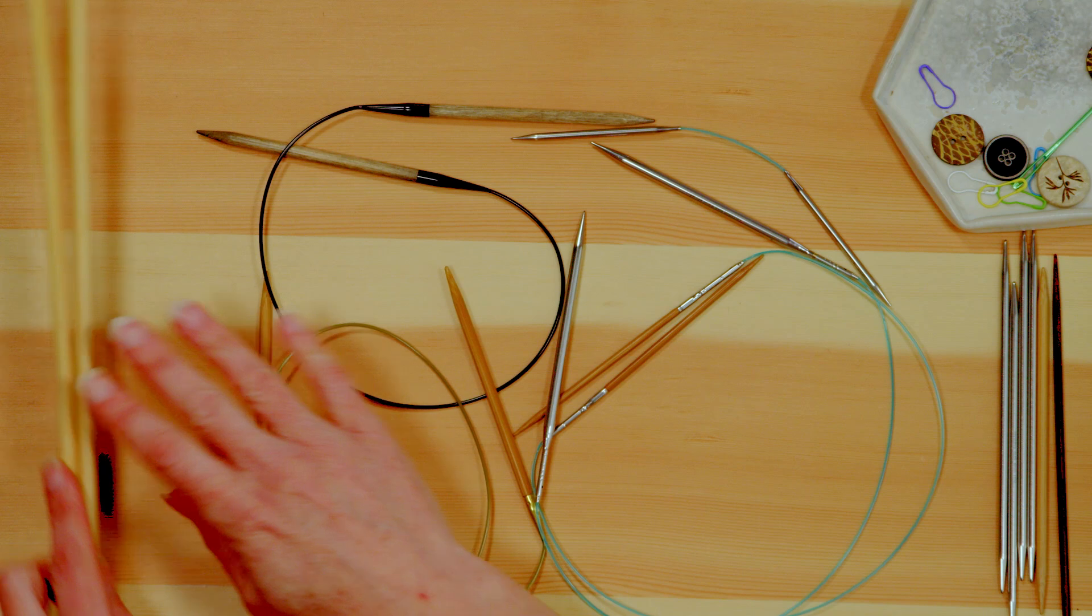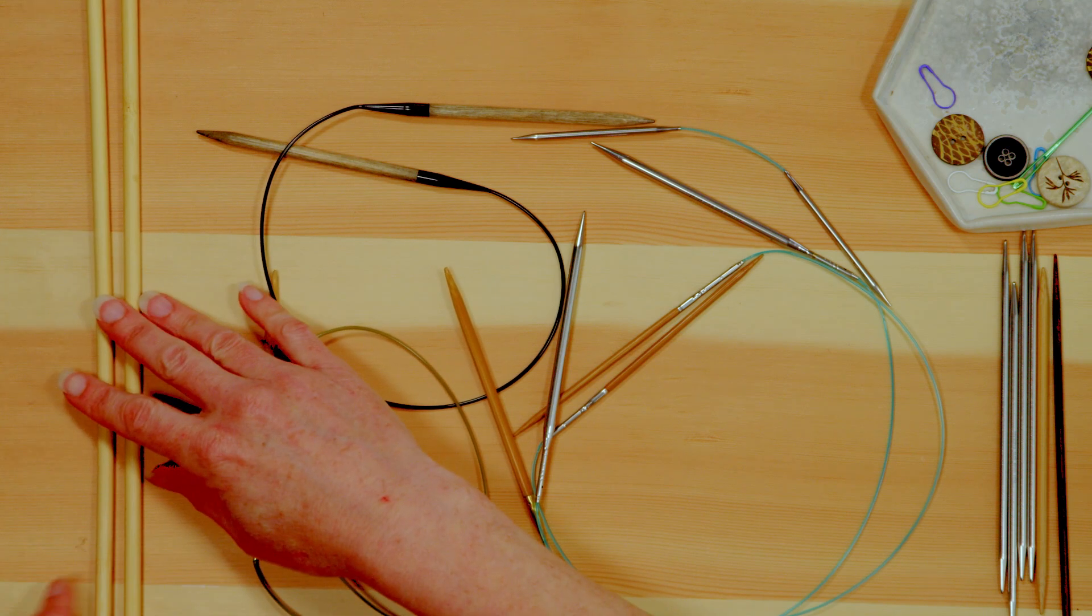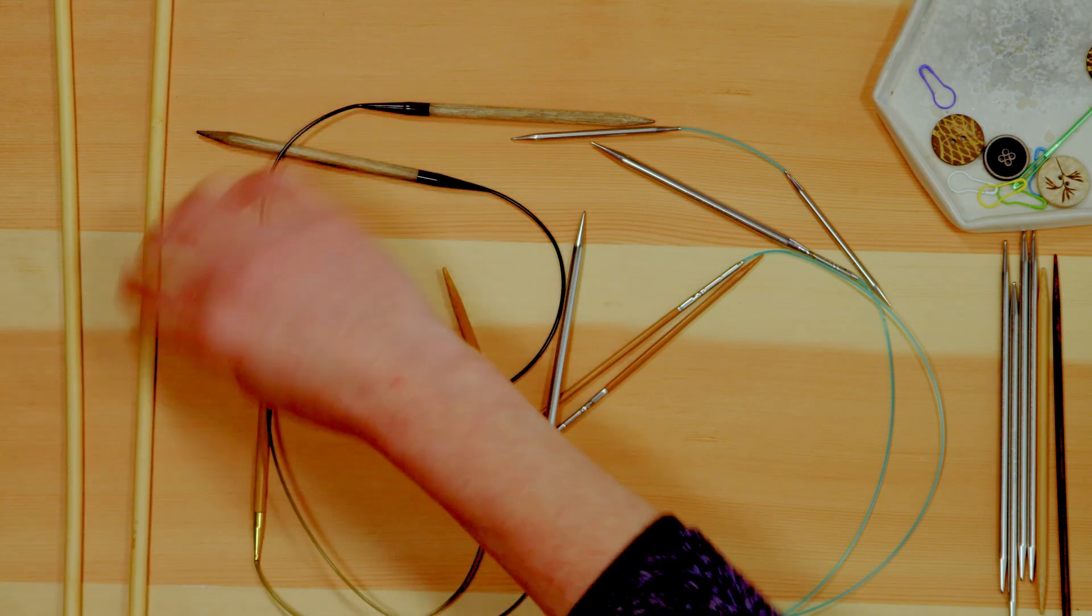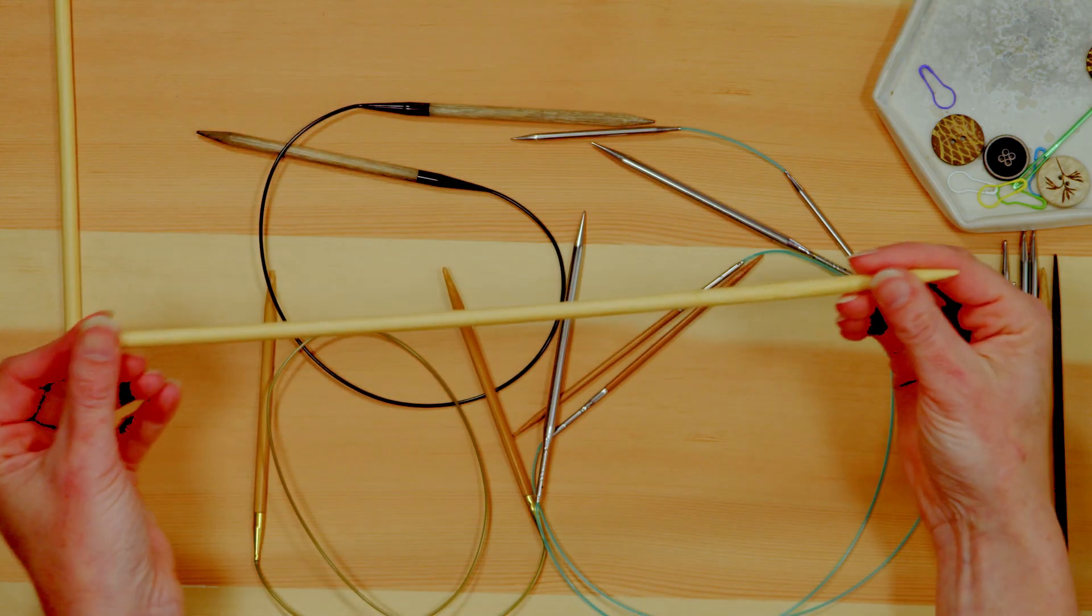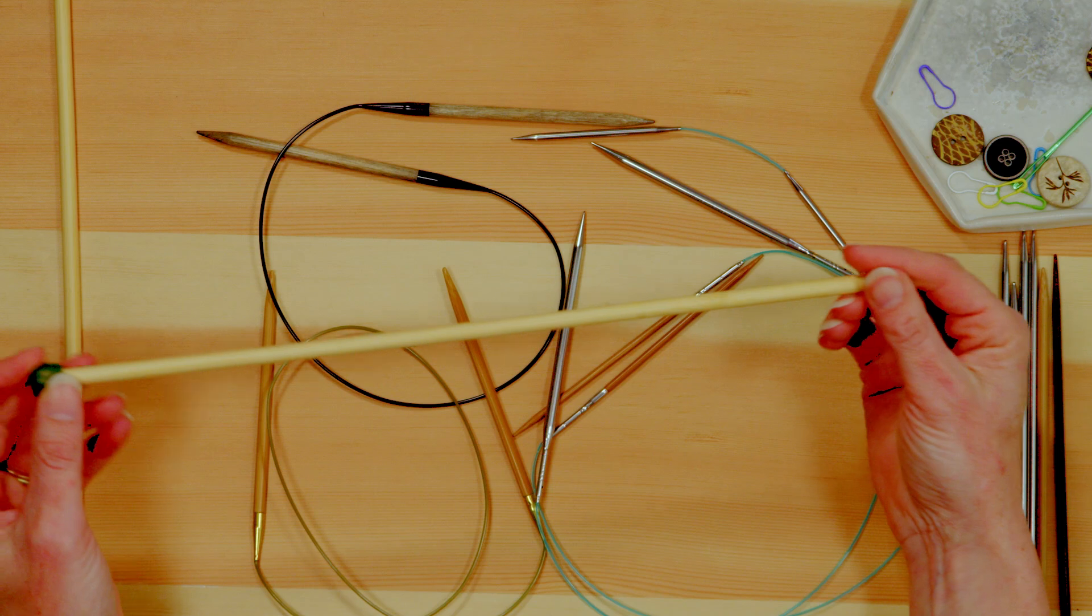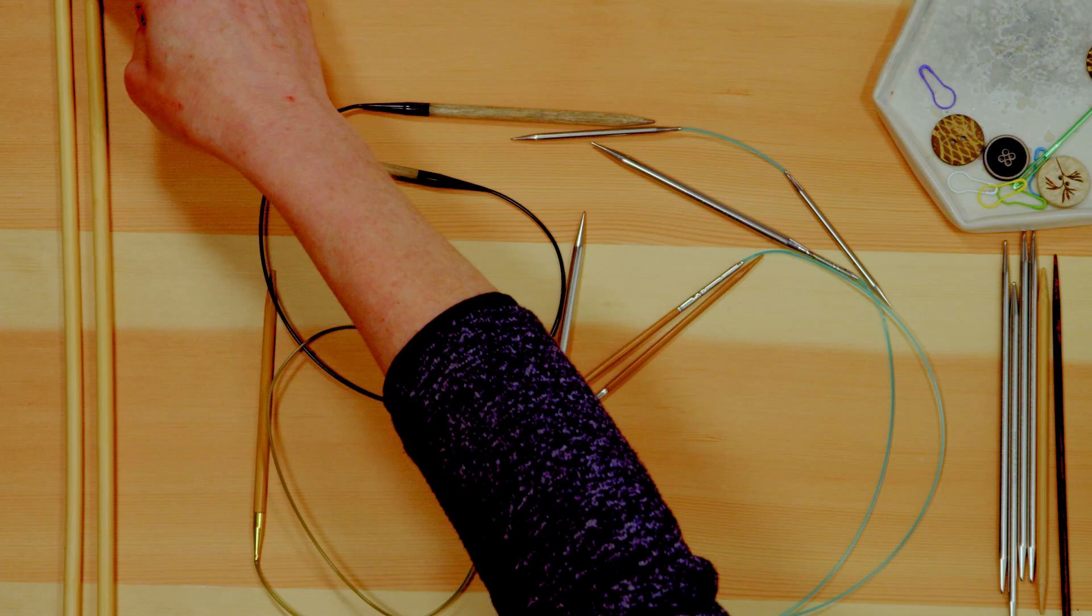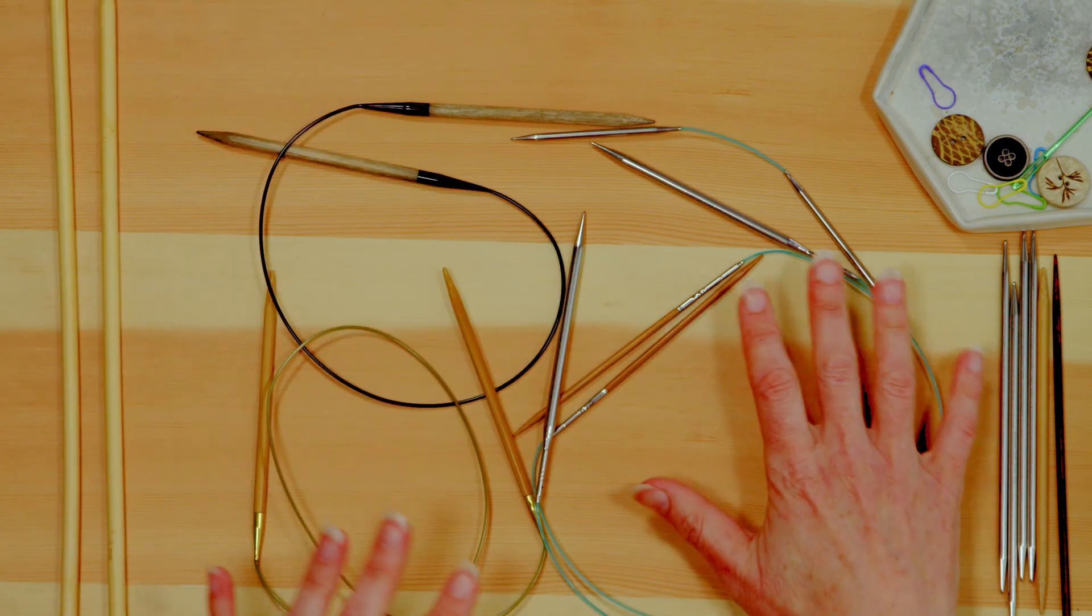So we'll start just by describing them. We've got your straight needles which are pretty much as they are described. They're just straight, no bend, there's a little knob at the end so your stitches don't fall off, they come in a variety of thicknesses and any variety of lengths. So that is object number one.